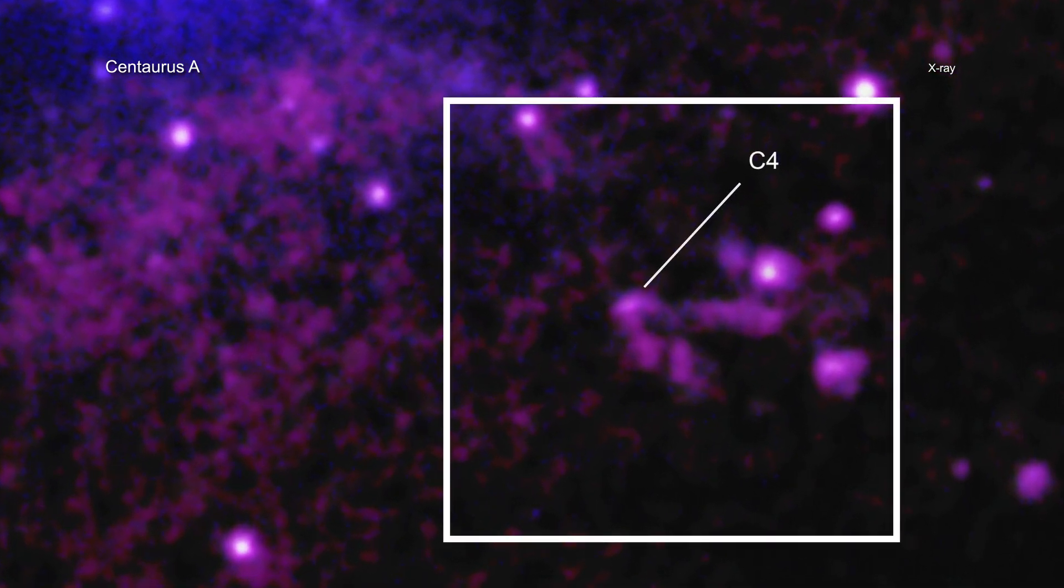Called C4, this source is located close to the path of the jet from the supermassive black hole and is highlighted here.